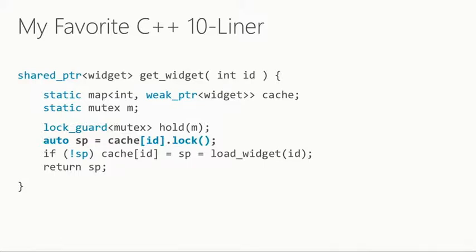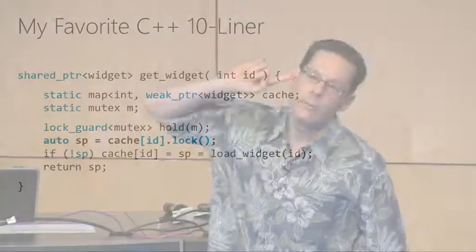Tell me what this 10-liner does. Returns a widget. Returns a widget. Yes. What else? How? What are the semantics? How long does the widget live? Say again? It's an implementation of a cache. Is it thread-safe? Yes. Looks like it, so ship it, right? So what are the lifetime semantics of every widget in the cache?